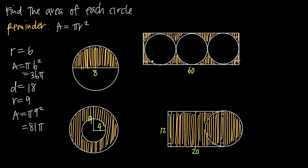It's really common to be given problems where you're asked to find the shaded area. In this first example, we have a circle with a diameter of 8 and we need to find the area of half of the circle. We always need radius — the diameter is 8, so the radius is half of 8, or 4. Area equals pi times 4 squared, or 16 pi. But that's the area of the entire circle, and we only want half of it, so we divide by 2. 16 pi divided by 2 gives us 8 pi — the area of the shaded region.